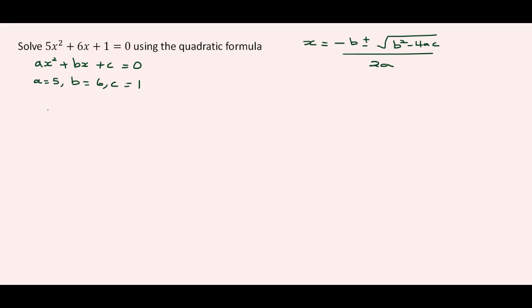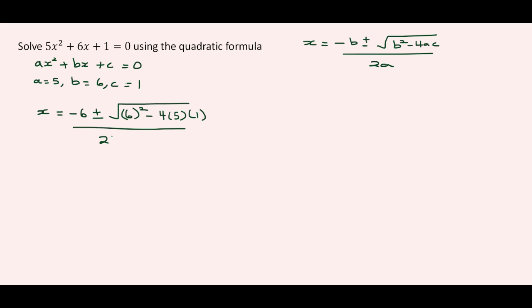Now we're going to plug these values in. X is equal to minus B, so it's minus 6, plus or minus the square root of B squared — that's 6 squared — minus 4 times A, which is 5, times C, which is 1, divided by 2A, so that's 2 times 5. This gives us minus 6 plus or minus the square root of 16 over 10.